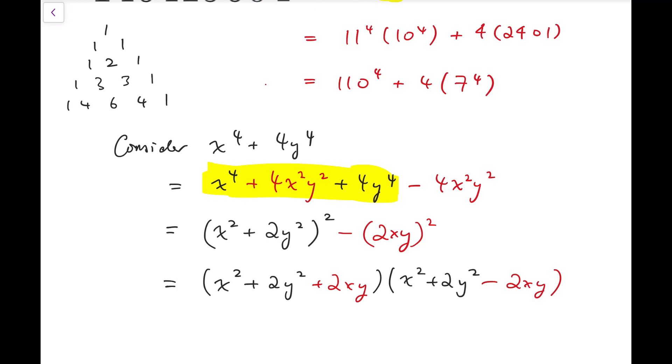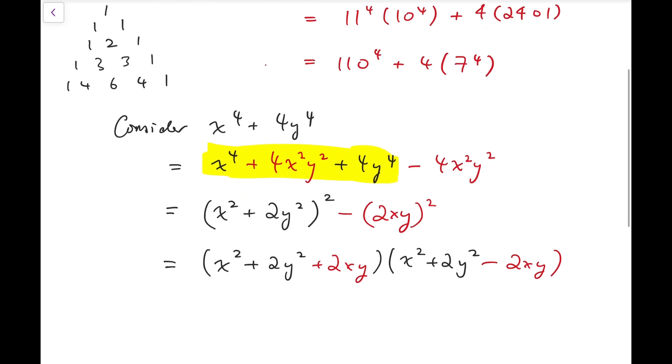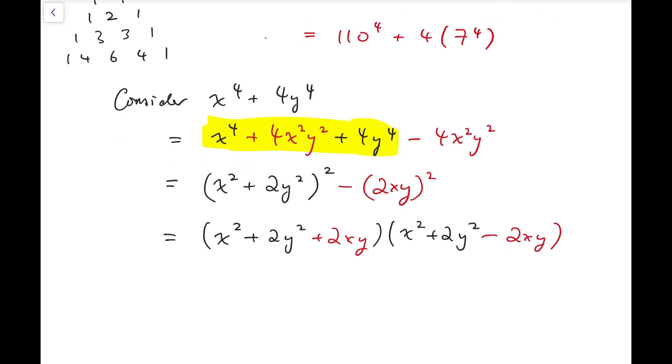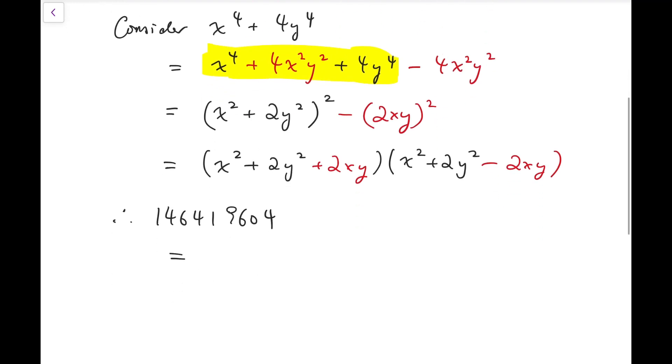So that means we've managed to factorize x to the 4 plus 4 times y to the 4. Now, back to our main problem, we can replace x by 110 and replace y by 7. So therefore, this can be rewritten as the product while x is 110, y is 7.